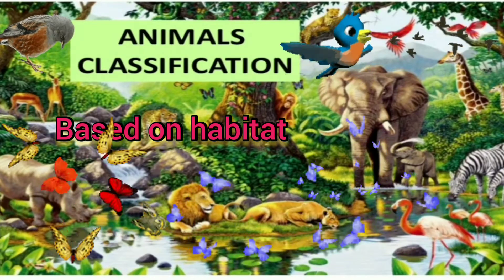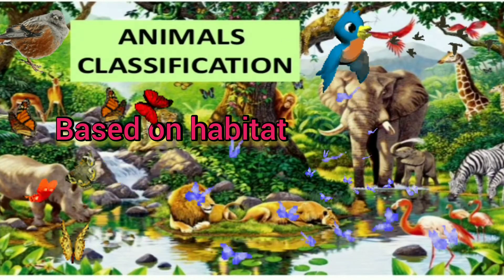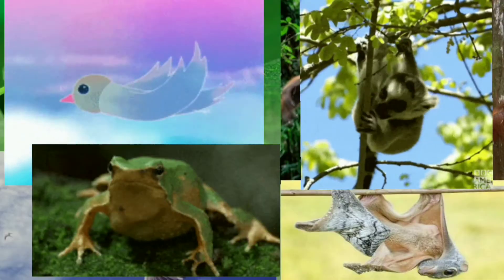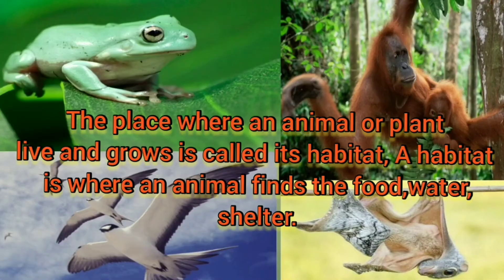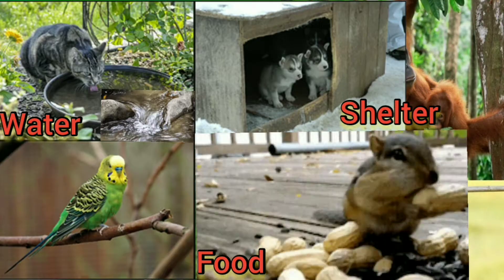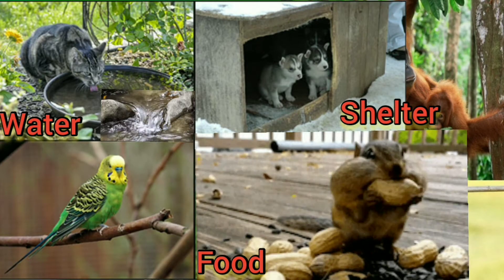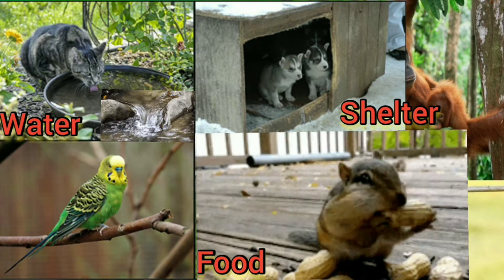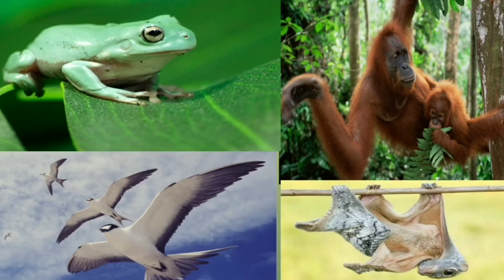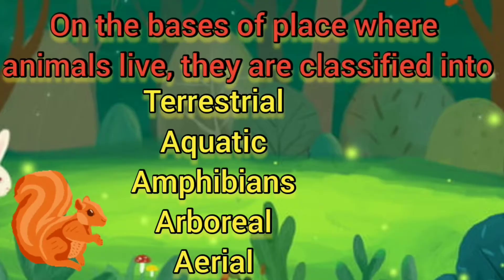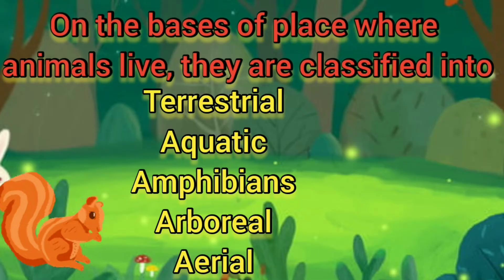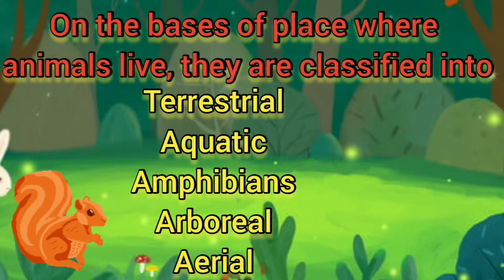Classification of animals based on habitat. The place where an animal or plant lives and grows is called its habitat. Habitat is where an animal finds the food, water and shelter — the area where all its needs can be met. On the basis of the place where animals live, they are classified into five categories.